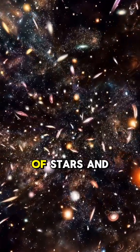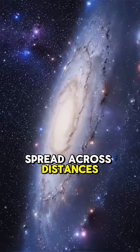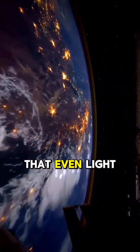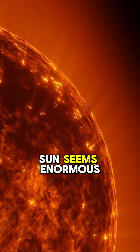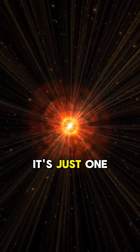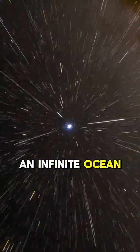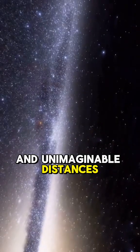Each with billions of stars and planets spread across distances so vast that even light takes millions of years to travel between them. So while the sun seems enormous from Earth, it's just one tiny point in an infinite ocean of stars and unimaginable distances.